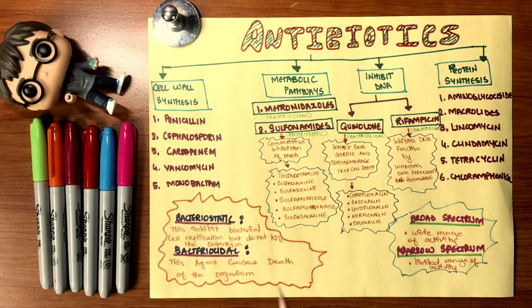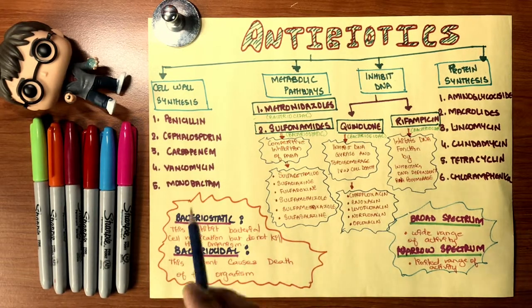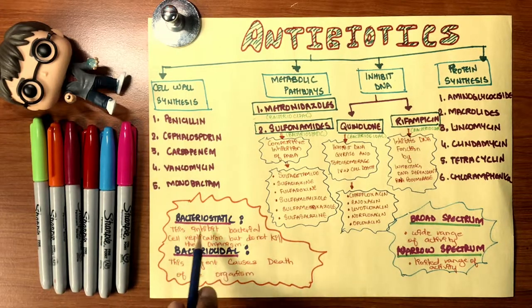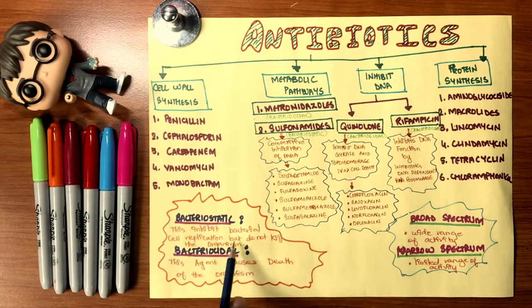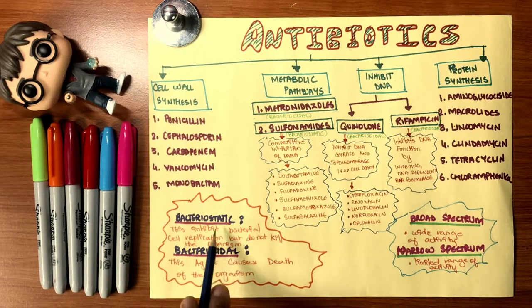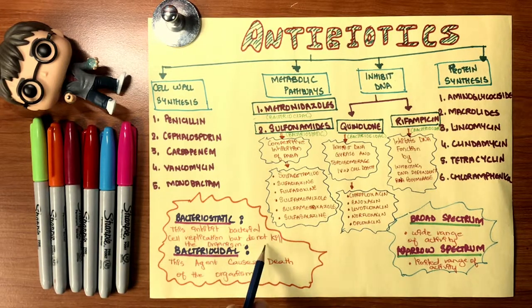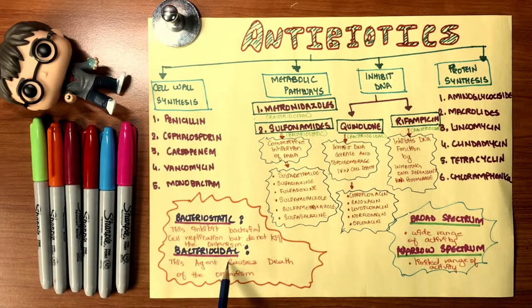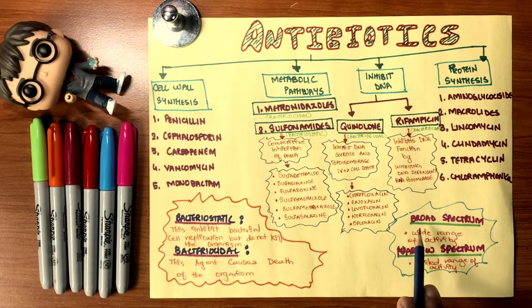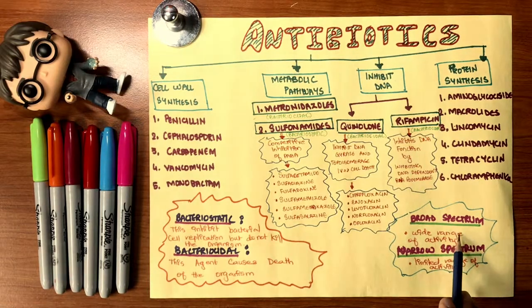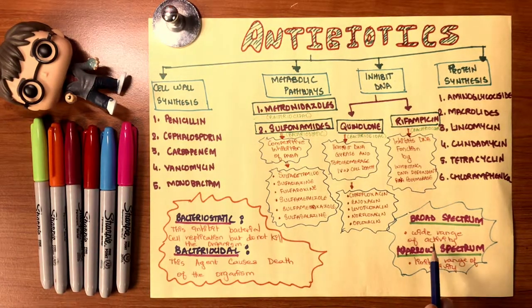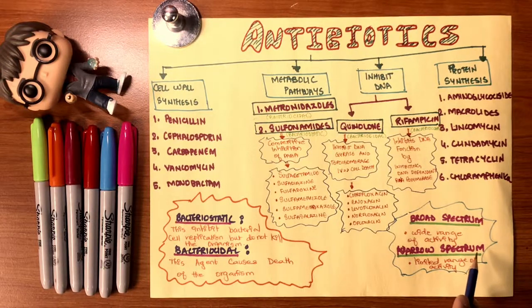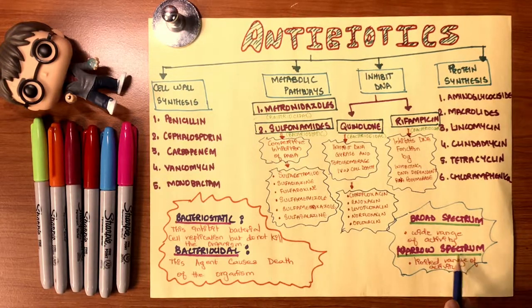Let me first get to some short definitions. Bacteriostatic means this inhibits the bacterial cell replication but does not kill the organism—static, not kill. Bacteriocidal: this agent causes death of the organism—cidal, death. What is broad spectrum? A broad-spectrum antibiotic has a wide range of activities, so gram-positive, gram-negative, anaerobic, aerobic.